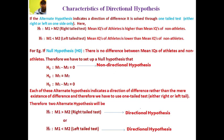Characteristics of directional hypothesis. A directional hypothesis indicates the direction of the difference. If the alternate hypothesis indicates a direction of difference, it is solved through a one-tailed test. A one-tailed test can either be right or left. If M1 is greater than M2, then it is a case of a right-tailed t-test.